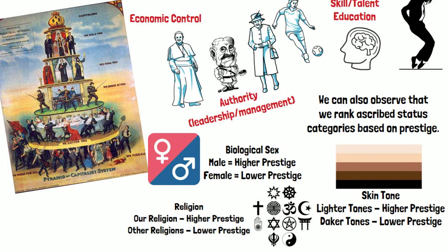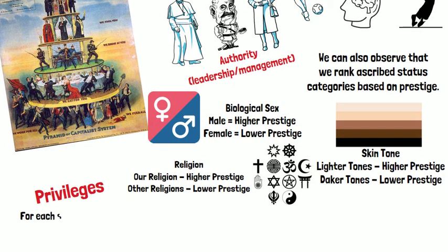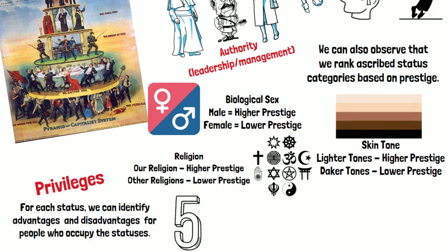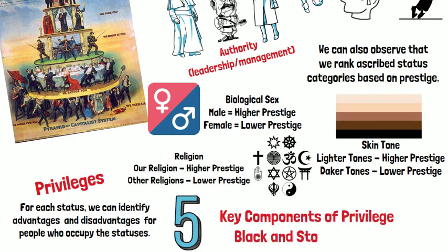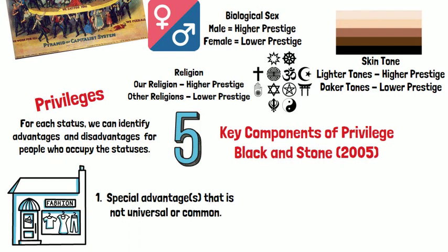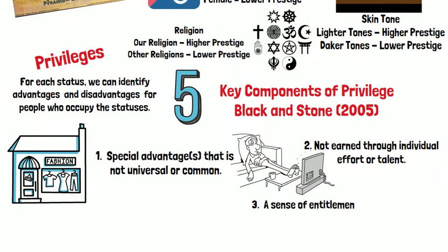When we think about rankings of statuses and prestige, we also have to recognize that higher prestige statuses come along with more privileges — the advantages for people who occupy those statuses. Blackstone identified five key components of privilege. First, privilege is a special advantage that is not universal or common.